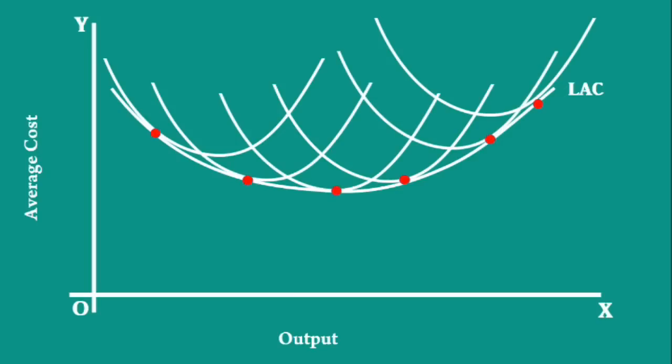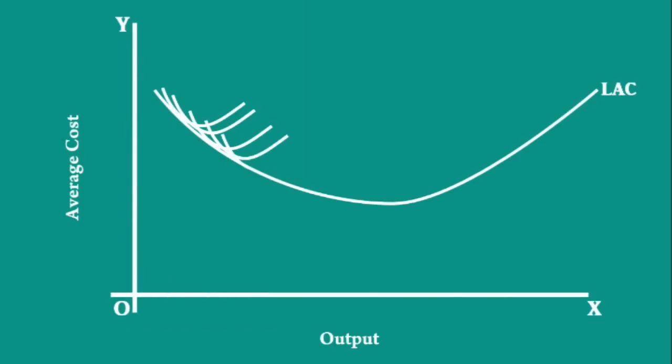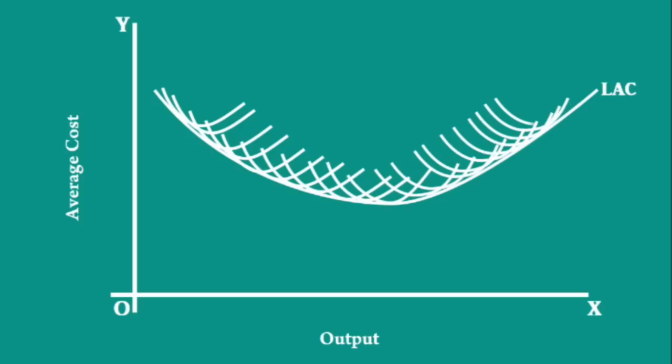Hence, long run average cost curve represents not a few plant curves. In fact, it represents as many plant curves as there are points on the curve.